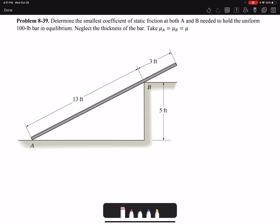Hello everyone, in this video I'm going to solve Problem 8-39 of Chapter 8. Determine the smallest coefficient of static friction at both A and B needed to hold the uniform 100-pound bar in equilibrium. Neglect the thickness of the bar. Take μ_A equals μ_B equals μ. So the question is asking for this coefficient of friction.